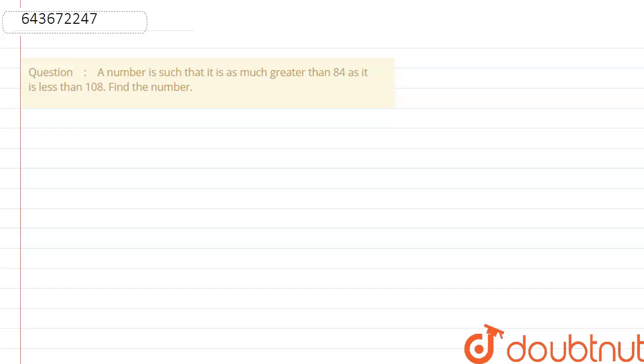A number is such that it is as much greater than 84 as it is less than 108. Find the number. So here the solution is...